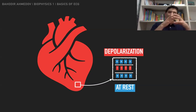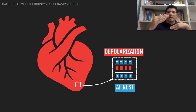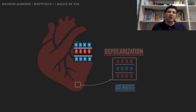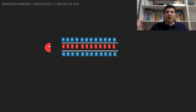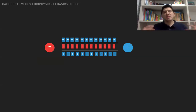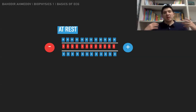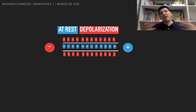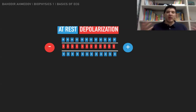The depolarization basically moves across the cells, and we would like to trace this movement. I would like to look at a chain of a couple of cardiac muscle cells and trace this depolarization by placing two electrodes — a positive electrode and a negative electrode. At rest, all the cells have negative inside and positive outside. When depolarization happens, we have negative outside and positive inside. After repolarization, we return to the standard position.